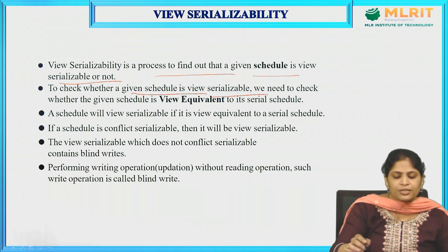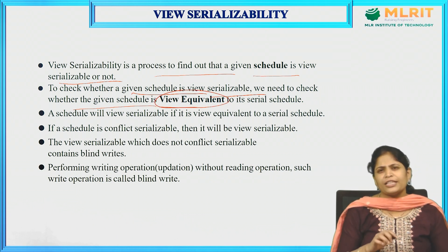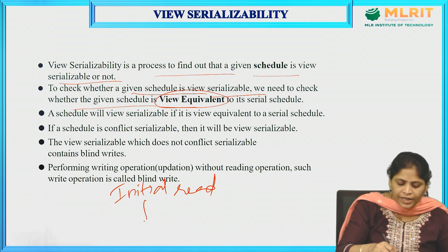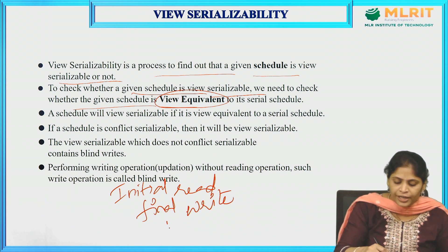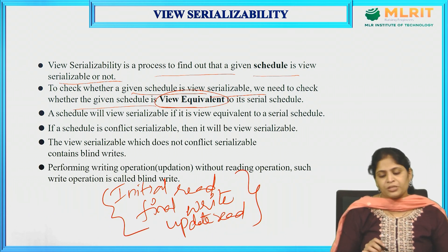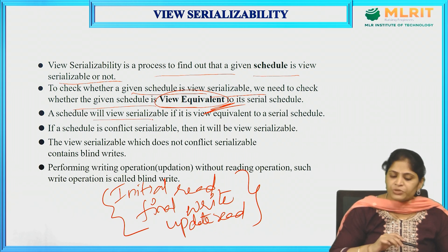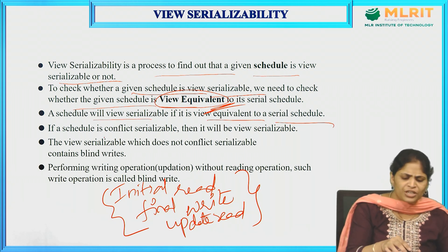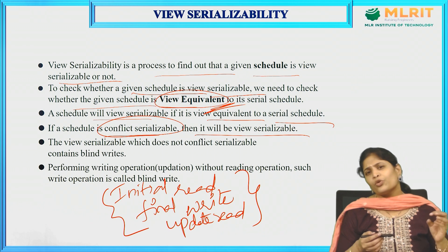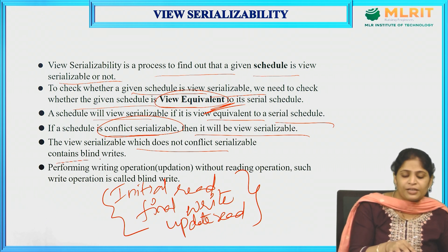To check whether the given schedule is view serializable, we need to check whether it is view equivalent. View equivalent means it must satisfy three conditions: initial read, final write, and update read. A schedule will be view serializable if it is view equivalent to a serial schedule. If a schedule is conflict serializable, it will also be view serializable. View serializable schedules that are not conflict serializable contain blind writes.